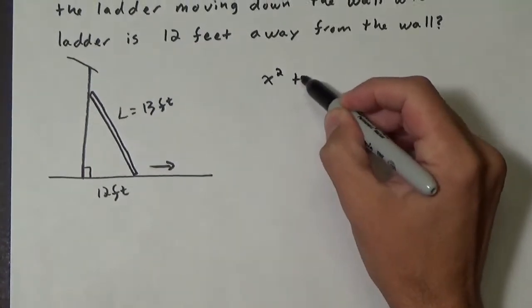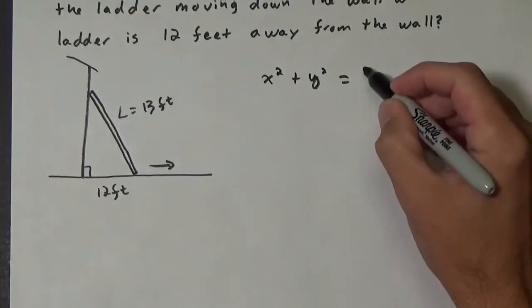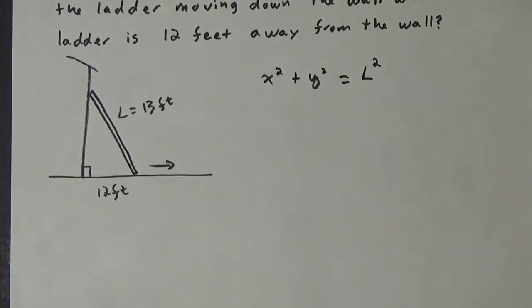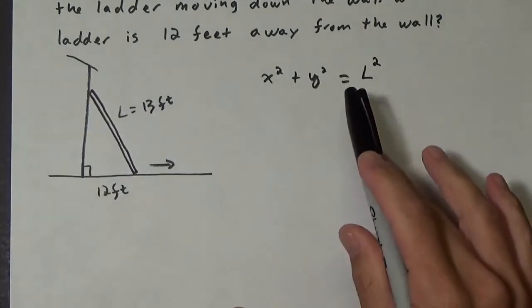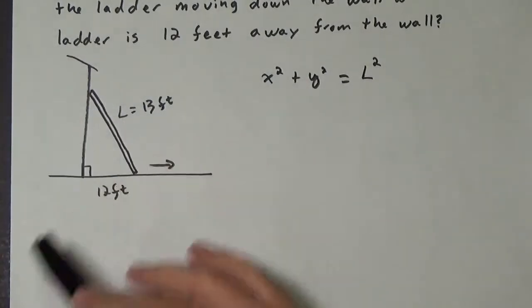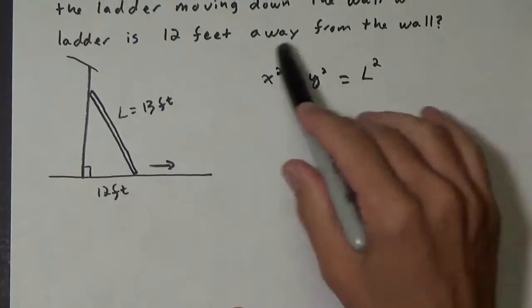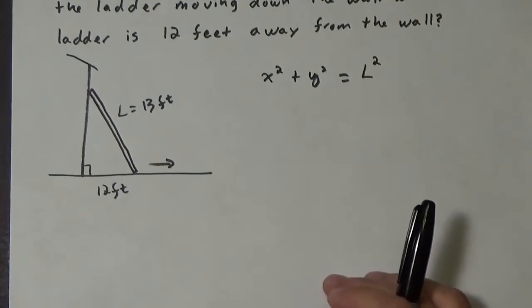So let's go ahead and write that out. x squared plus y squared equals L squared. So we have x squared plus y squared equals L squared. And the reason we chose this equation for the right triangle is because it appears that we're going to be working with the sides and this relates the sides.